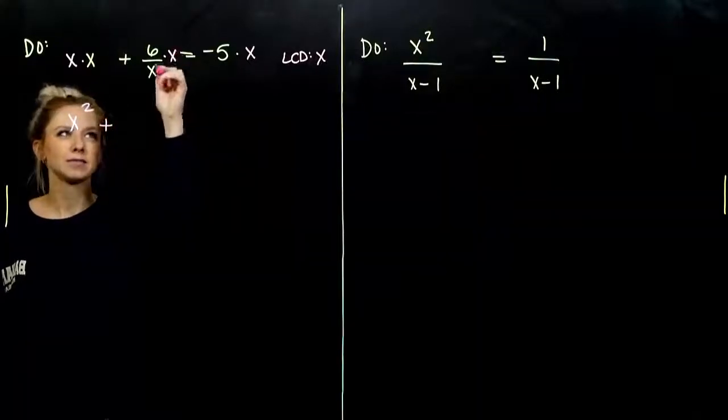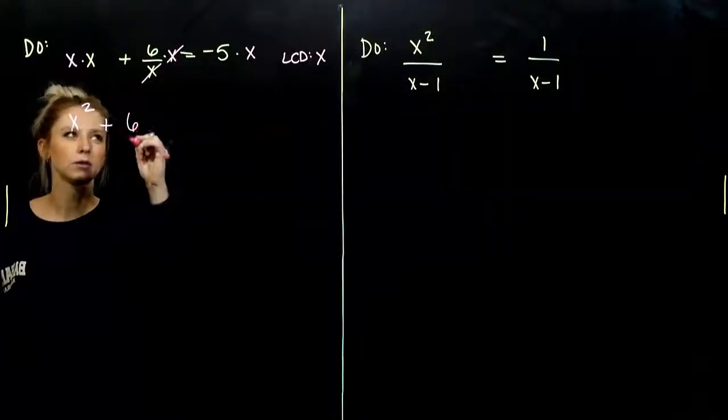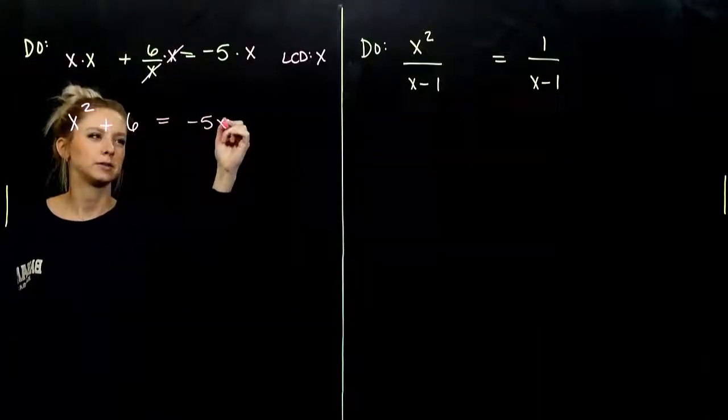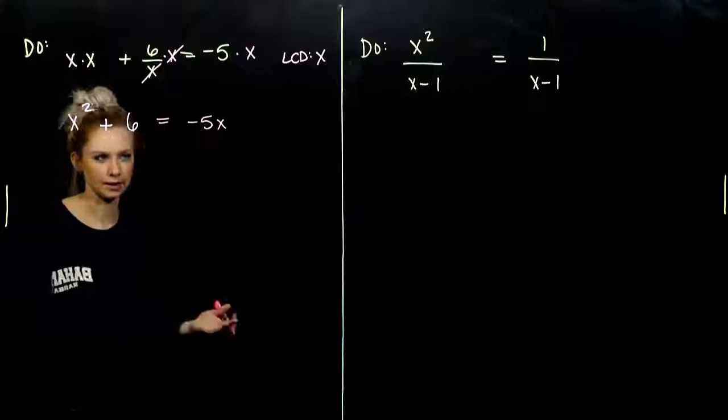Next one, x divided by x. Those will be gone. We'll be left with six. And over here, negative five times x gives us negative five x.